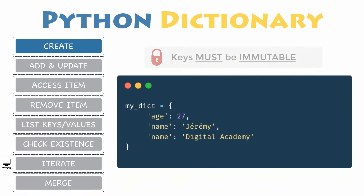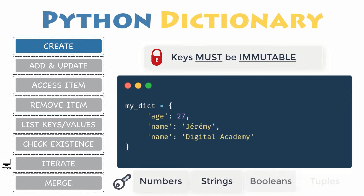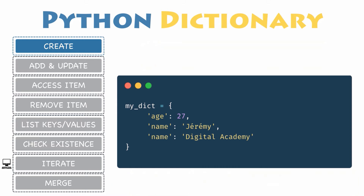Keys must be of an immutable type. You can use any object of immutable type as dictionary keys, such as numbers, strings, booleans, or tuples. Otherwise, an exception is raised when a mutable object is used as a key.